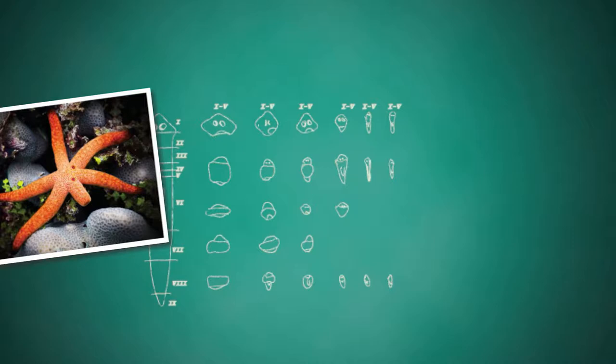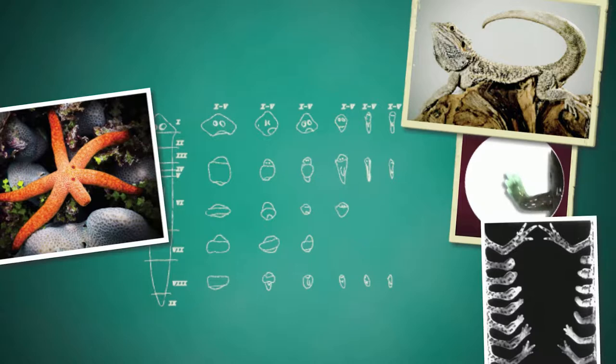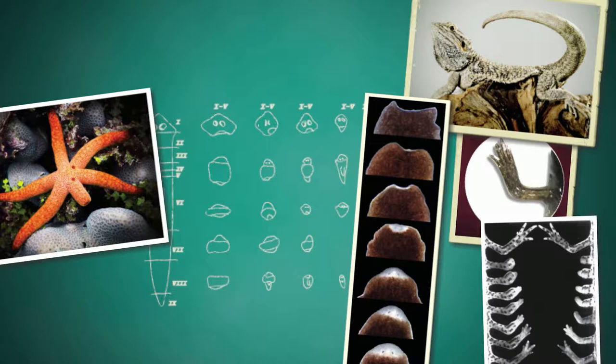Many animals can regrow lost body parts. Starfish can grow new arms. Newts and salamanders can grow new legs. Lizards can grow new tails. And planaria, a type of flatworm, can even grow new heads. This process, known as regeneration, relies on stem cells.